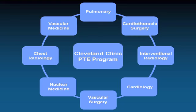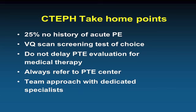What you need is a dedicated multidisciplinary team — pulmonologists, surgeons, vascular medicine, radiology, nuclear medicine, and cardiology — because many cases are complicated and require collective expertise. Take-home points: remember that a quarter of patients will not report a history of PE yet still have CTEPH; VQ scan is the screening test of choice; do not delay surgical evaluation in favor of medical therapy; always refer to a PTE center; and emphasize the team approach with dedicated specialists.